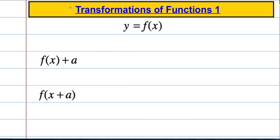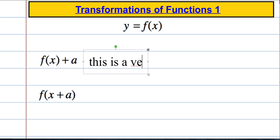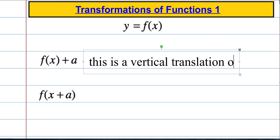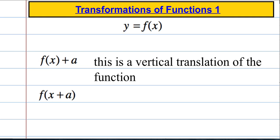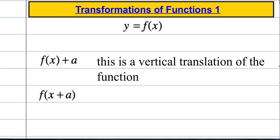So let's formalise that. f of x plus a — this is a vertical translation. If I add 1 to the function, it's going to move up by 1. If I take 1 away, it's going to move down by 1. So f of x plus a is a vertical translation of the function, and it moves up and down by a value of a.